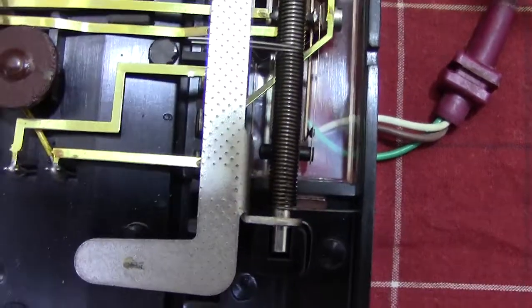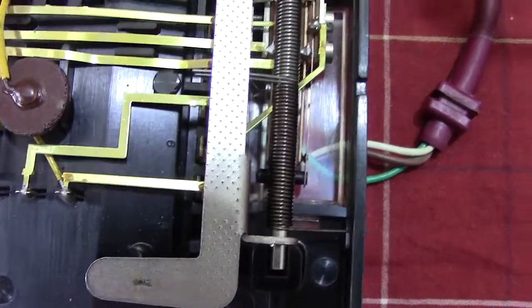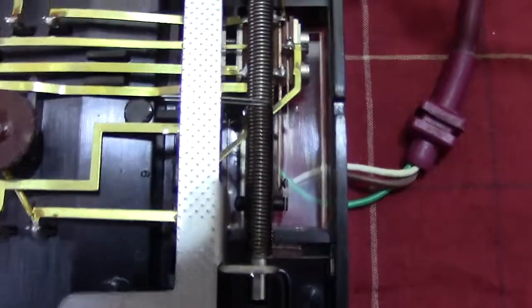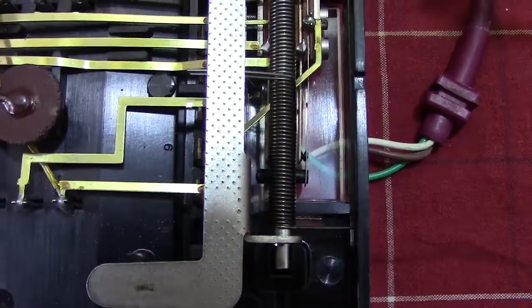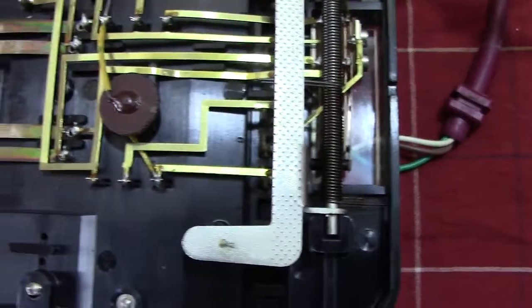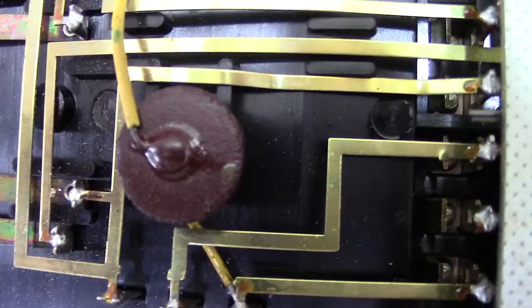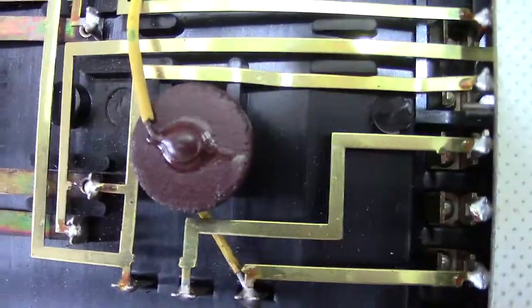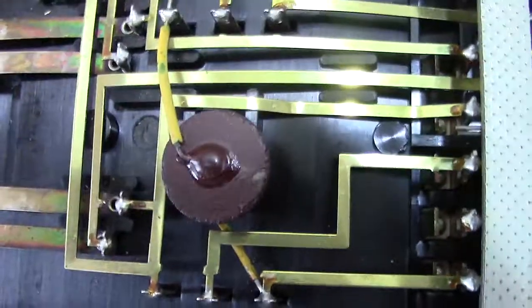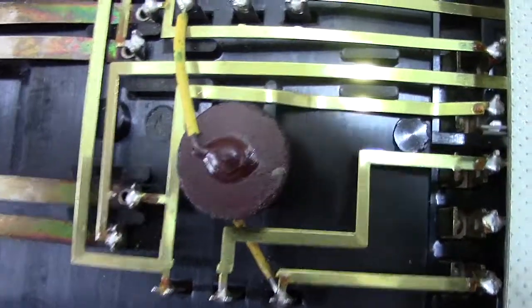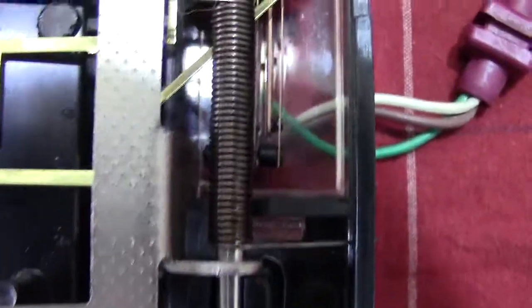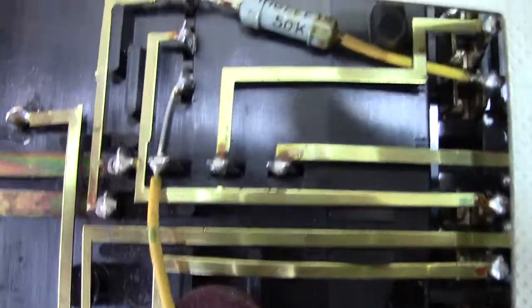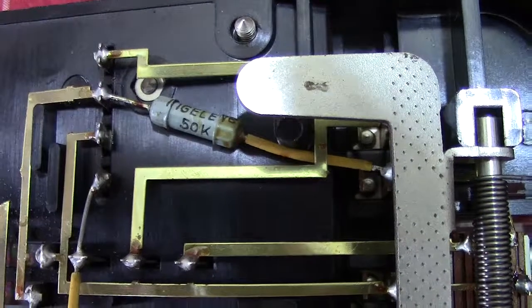You've got a disc there which is possibly across the earpiece to prevent clicks. That is wired to the metal strips. You've got a resistor also on the side there.